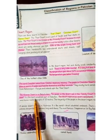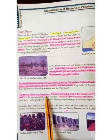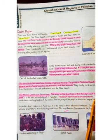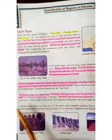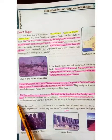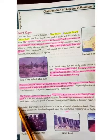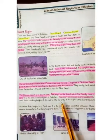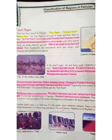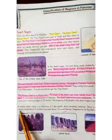The third is Kharan desert. Kharan desert is in Baluchistan. People call it a sandy desert because it is mostly sand. The desert experiences severe sand storms. There is very little rainfall and extreme temperatures.